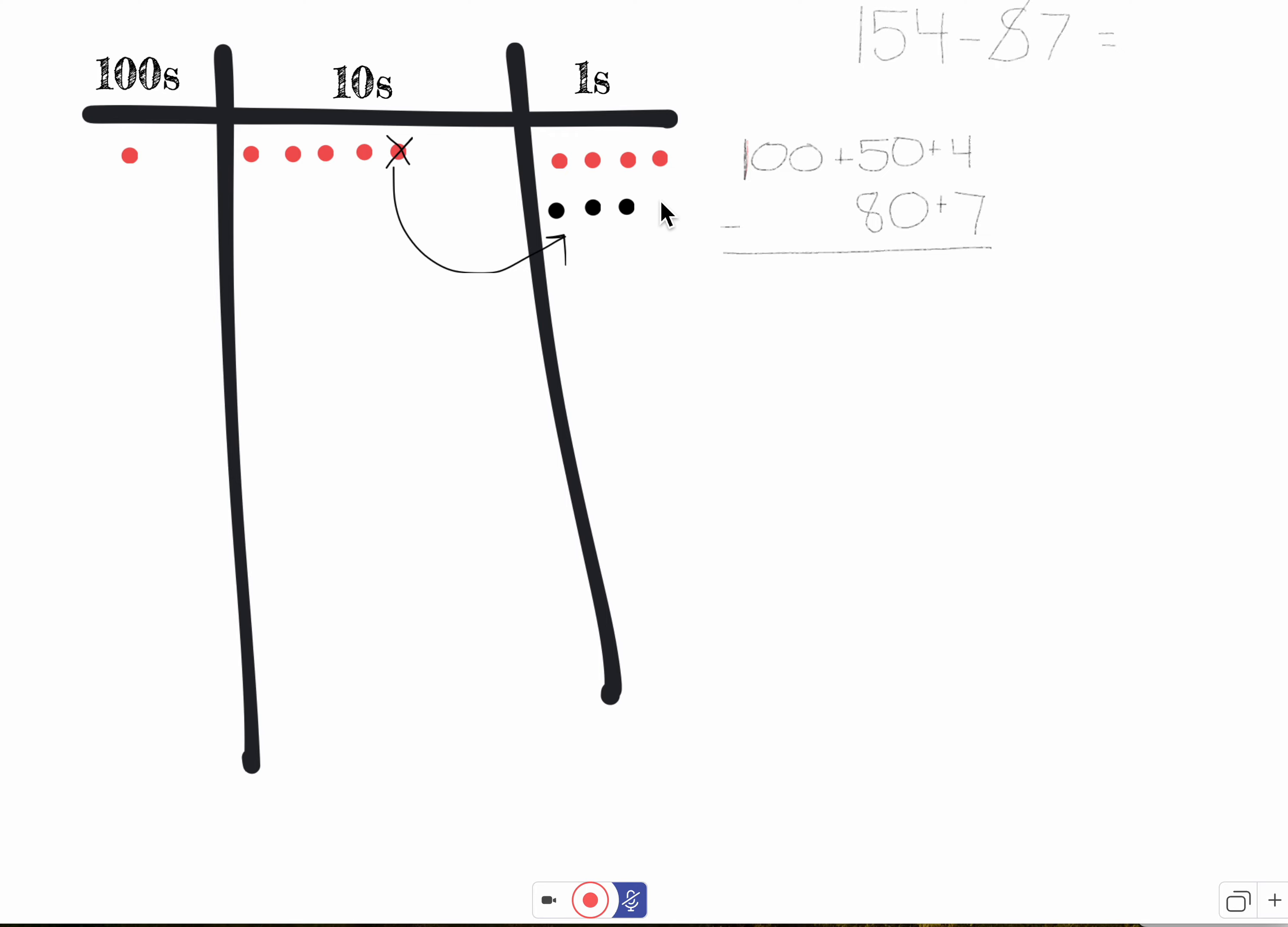One, two, three, four, five, six, seven, eight, nine, ten. Okay, I have not subtracted anything yet, so I should still have 154. Let me check: 100, 110, 120, 130, 140, 141, 142, 143, 144, 145, 146, 147, 148, 149, 150, 151, 152, 153, 154. Okay, I still have 154. I've just renamed it with 1 ten is now 10 ones.